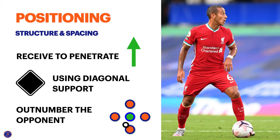Positioning. This is in regard to how we place ourselves within our team structure and our ability to use space. We want to orientate our body to be able to receive and penetrate, and we want to use diagonal support and play with teammates or options in quality spaces and areas.